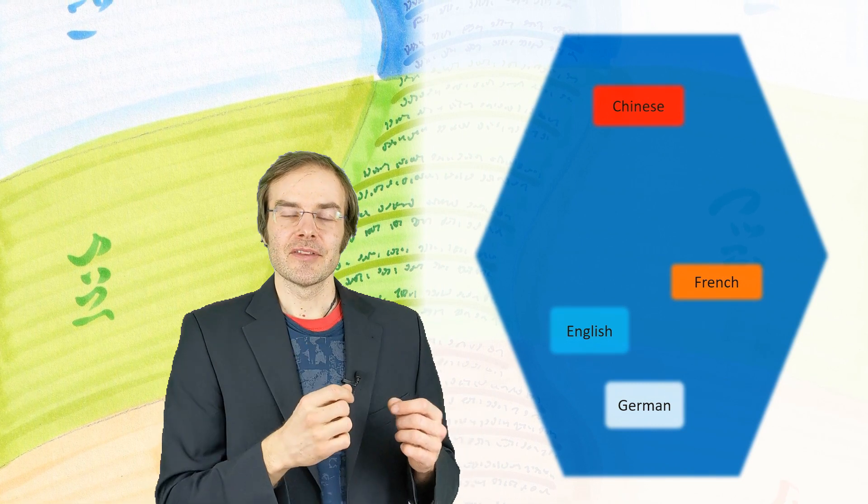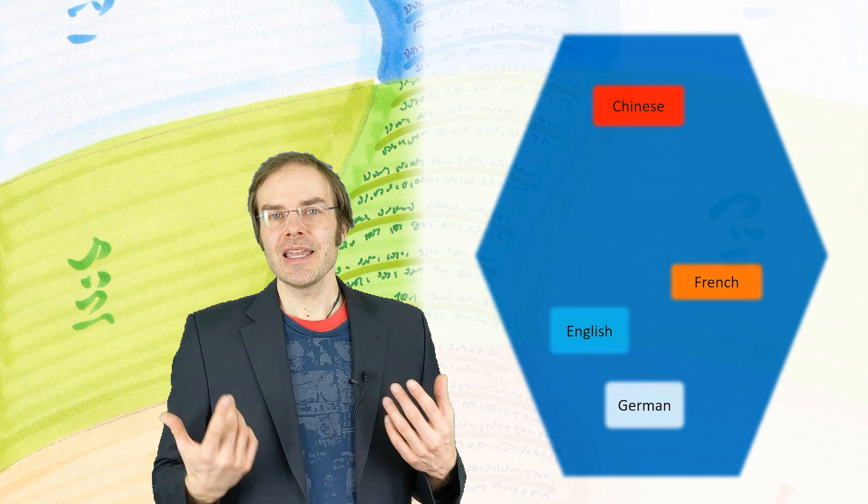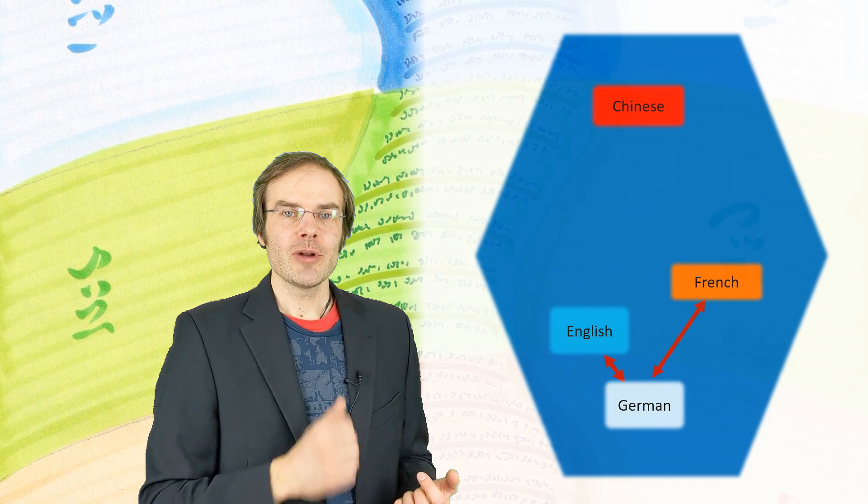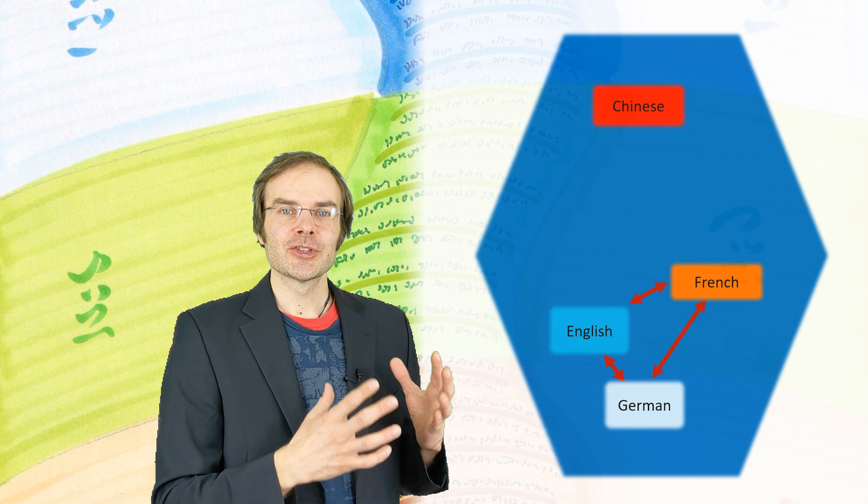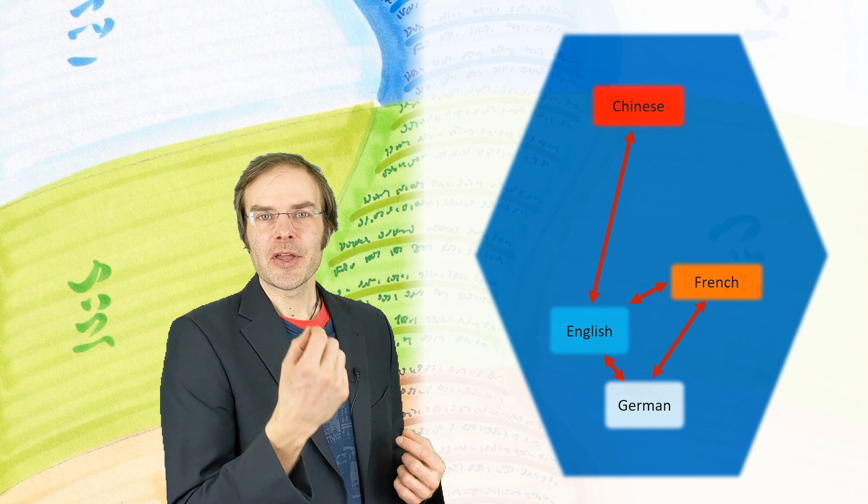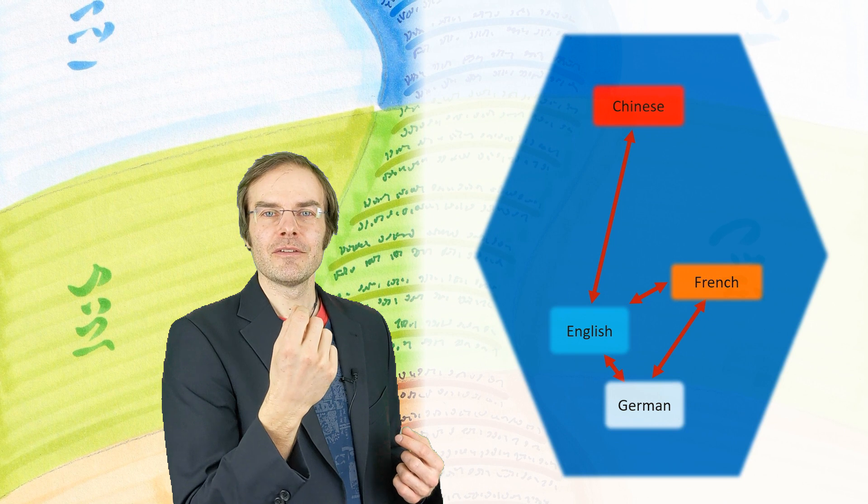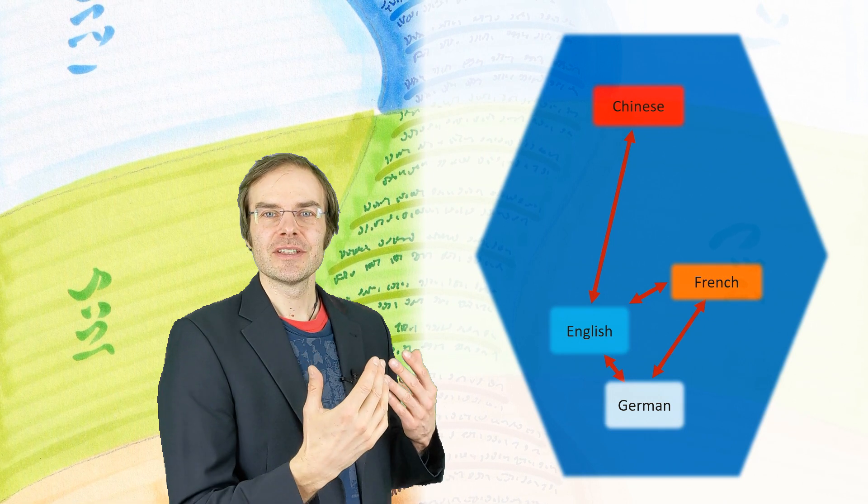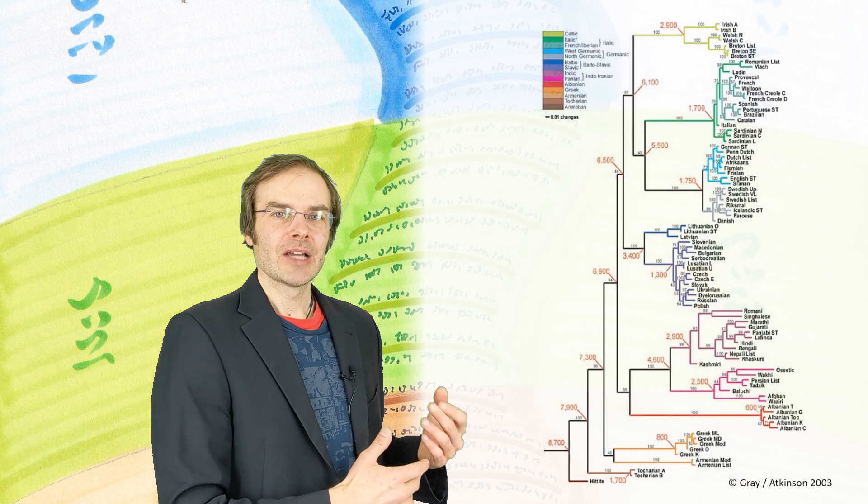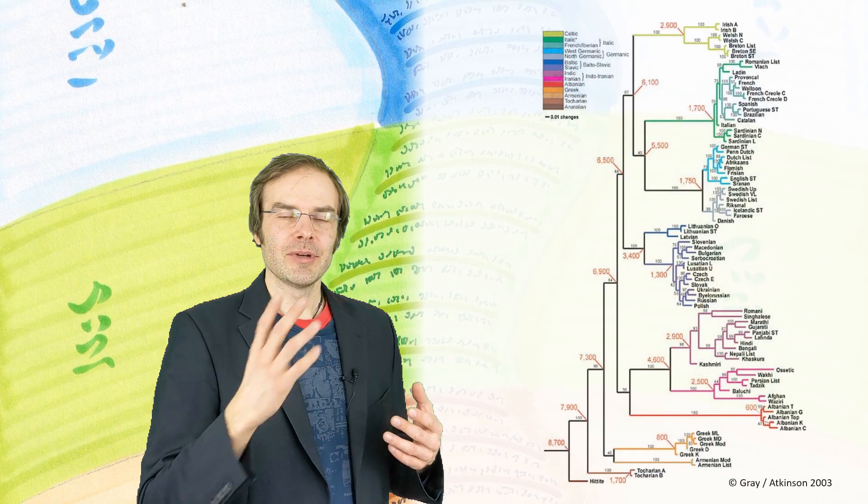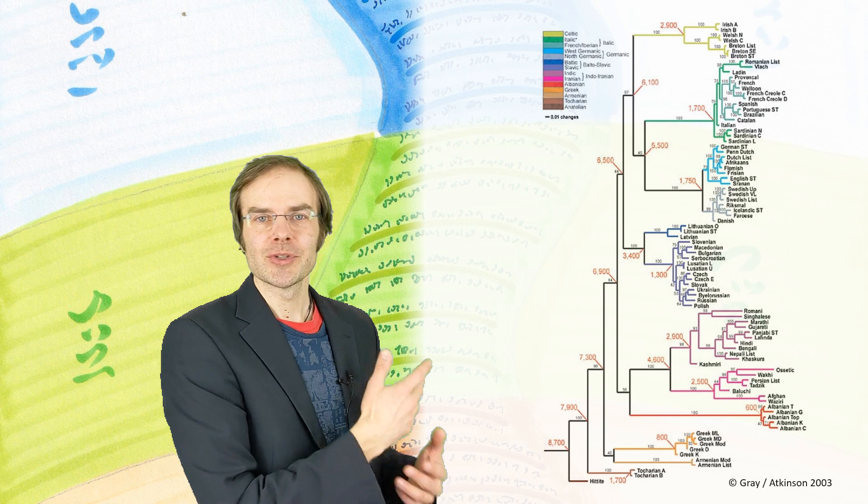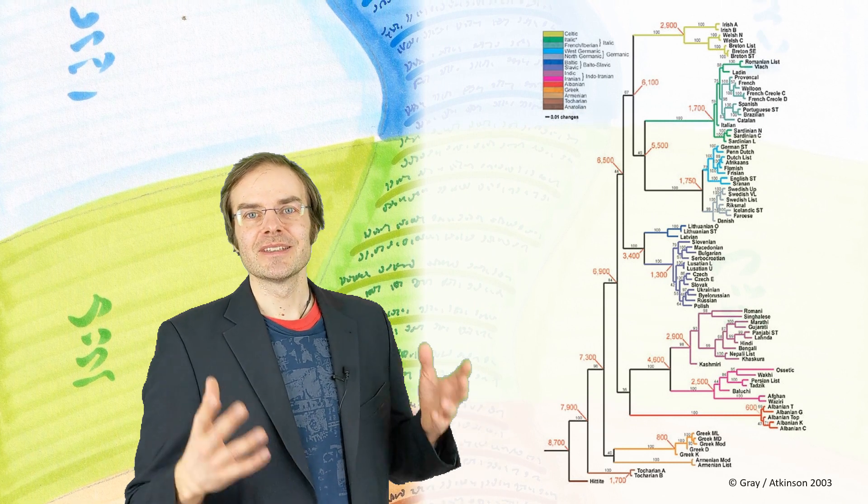Maybe now you can imagine that distances can be definable between these languages. For example we can say the distance, the metaphorical distance between German and English is shorter than that between German and French. And German, French and English obviously have much shorter distances between each other than compared to Chinese. There's nothing quantifiable here but you have a feeling of some kind of distance or relationship. Linguists spend a lot of time to analyze the relations and familiarity between all kinds of languages and that results in such language trees which you can see any kind of relation and metaphorical distance.